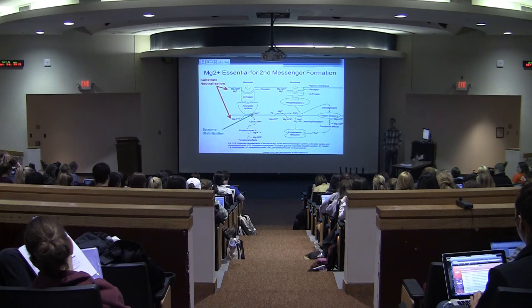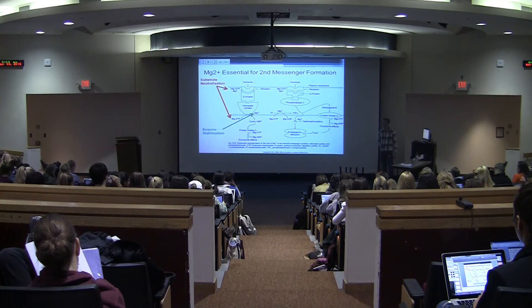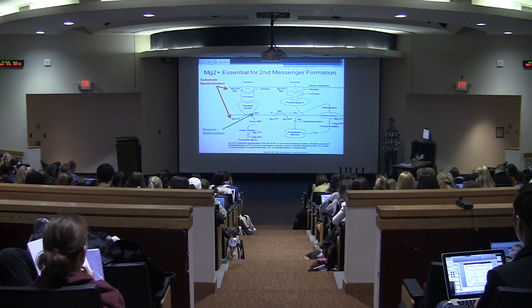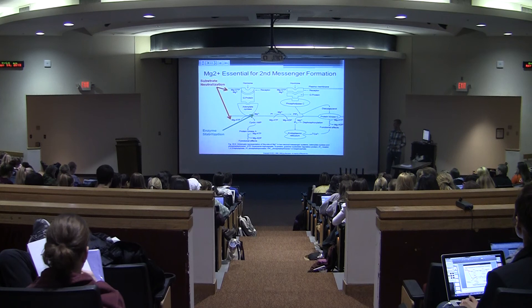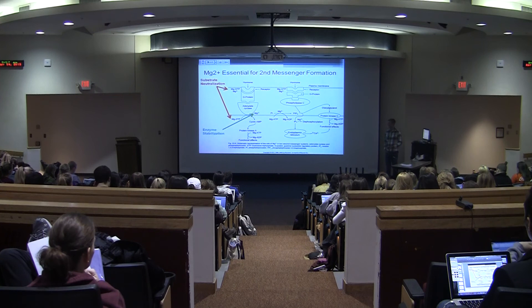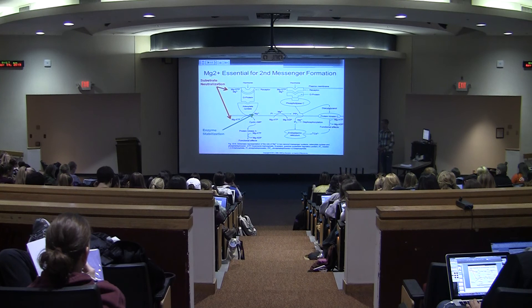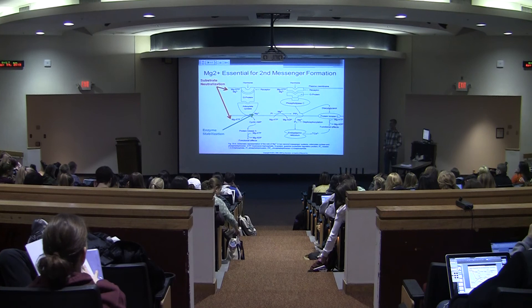Magnesium is also essential in multiple second messenger pathways. One is adenylate cyclase, which converts ATP to cyclic AMP — a potent second messenger with many functional effects. The other is phospholipase C, which converts PIP2 to IP3 and diacylglycerol, involved in calcium release from the endoplasmic reticulum. Both of these enzymes require magnesium both in the magnesium-ATP or magnesium-GTP complex for substrate stabilization, and also for stabilization of the enzyme itself — so both roles of magnesium in enzymatic complexes are involved here.